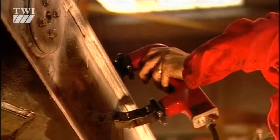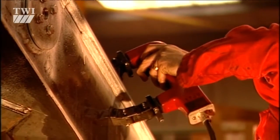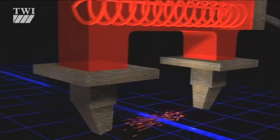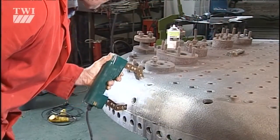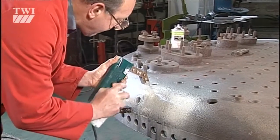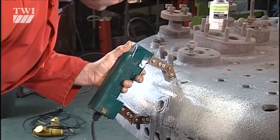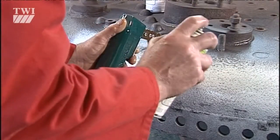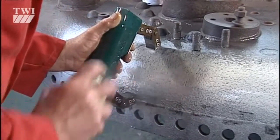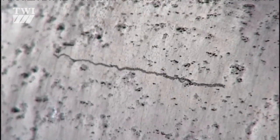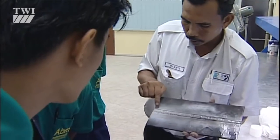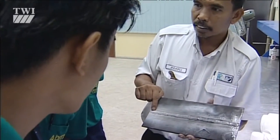We use MPI, as it's known, to find surface and just-beneath-the-surface discontinuities in ferromagnetic materials. We do it by introducing a magnetic flux into the material. An ink containing extremely fine ferrous particles is applied to the surface of a ferromagnetic material whilst a magnetizing field is applied. Flaws cause leakage of magnetic flux, which creates new magnetic poles, so the ferrous ink particles are drawn to the site of the flux leakage field disturbance, and the inspector can see it.